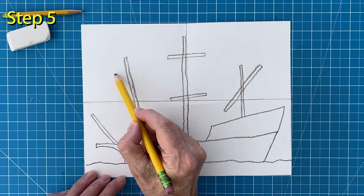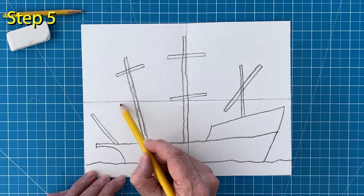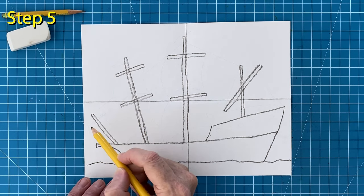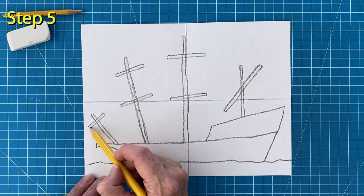Now draw two more on the next mast pole. And finally two even smaller poles on the very left.